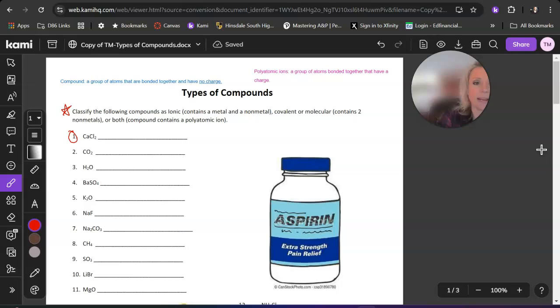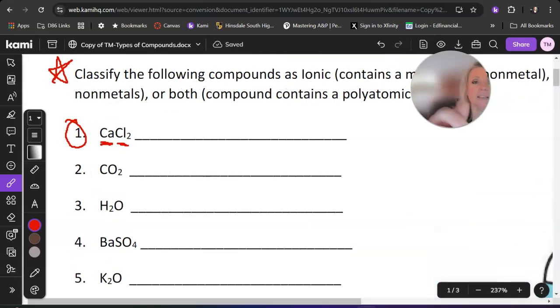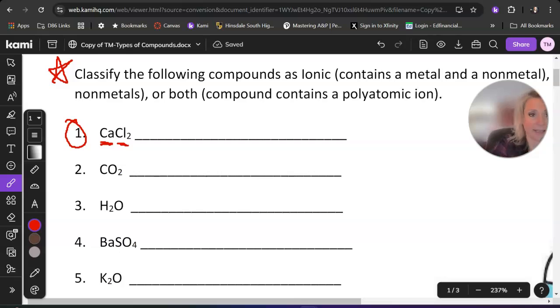So let's just take a look at number one. I see here in number one that I have calcium, which is Ca, and I have chlorine, Cl2. And I know that looks like an I, but it's not. That's an L. This is calcium chloride. Well, calcium is a metal. And calcium is on the left-hand side of the staircase.